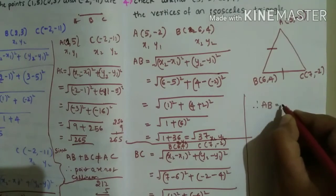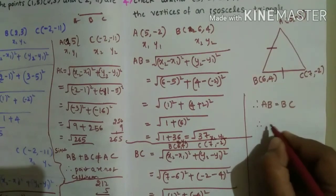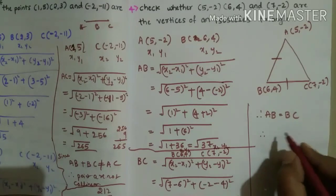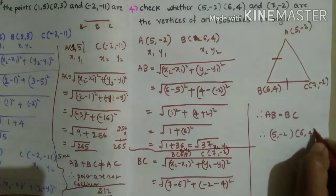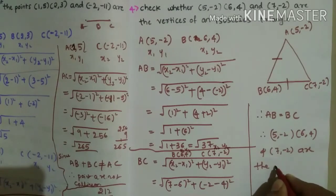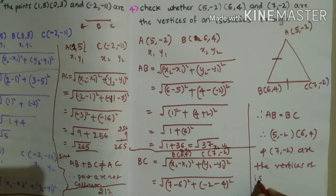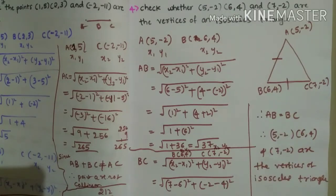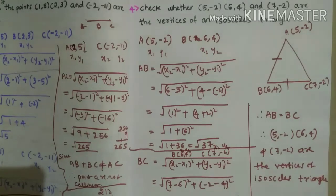Since AB = BC, any two sides of the triangle are equal. Therefore, the points (5,-2), (6,4), and (7,-2) are the vertices of an isosceles triangle. This is the fourth sum. In the next video we are going to learn the next sums of this exercise. If you like this video, please like, share, and subscribe to my channel. Thank you.